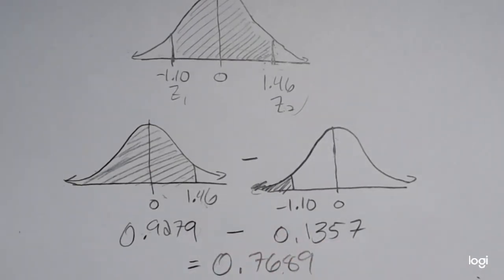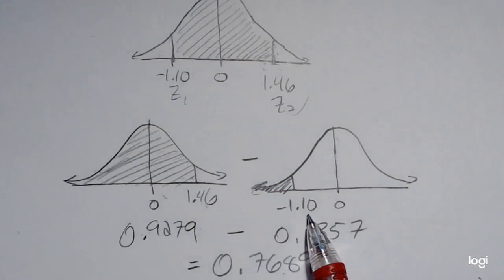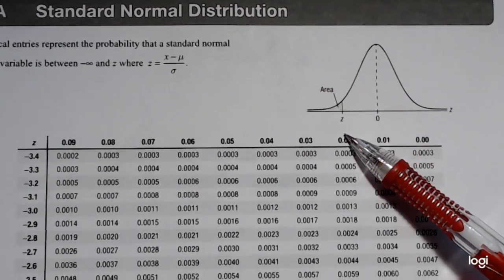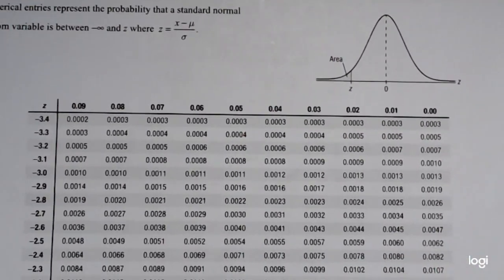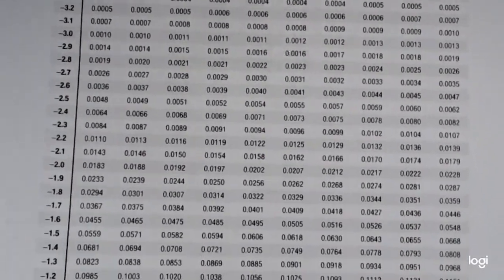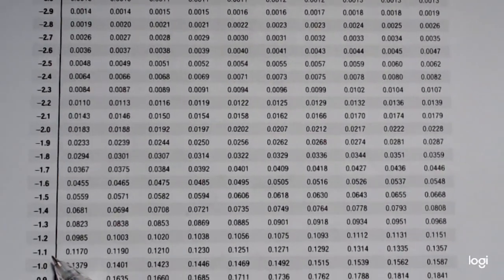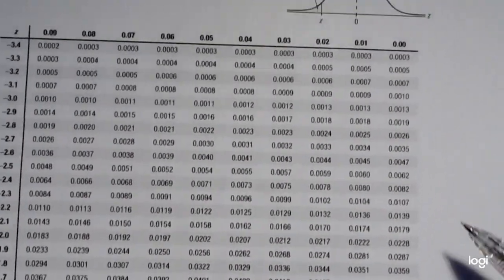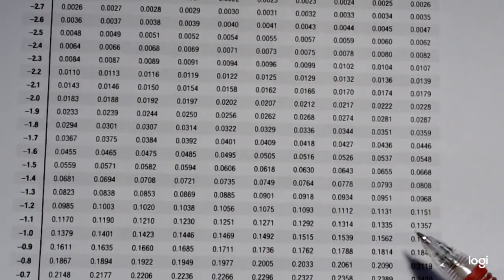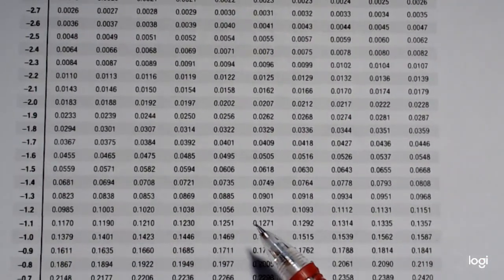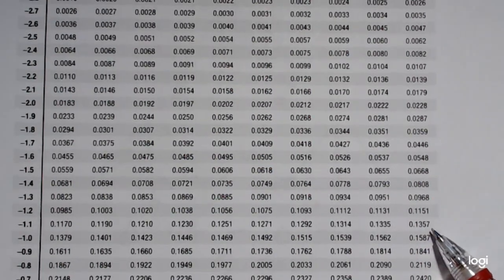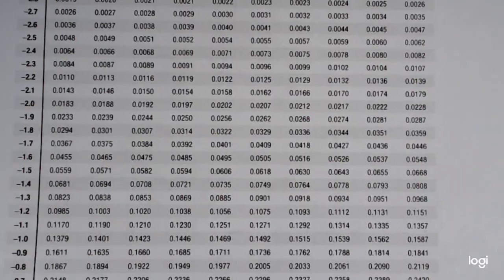And then using the table again for this negative z-score, I want to go to the page that indicates z is below 0. So these are all negative z-scores on the second page. I want to go down to negative 1.1 and then over to 0.00. You can see that across the top. It's hard to fit this all in the camera. So that little left tail area that I'm going to be subtracting out is 0.1357.